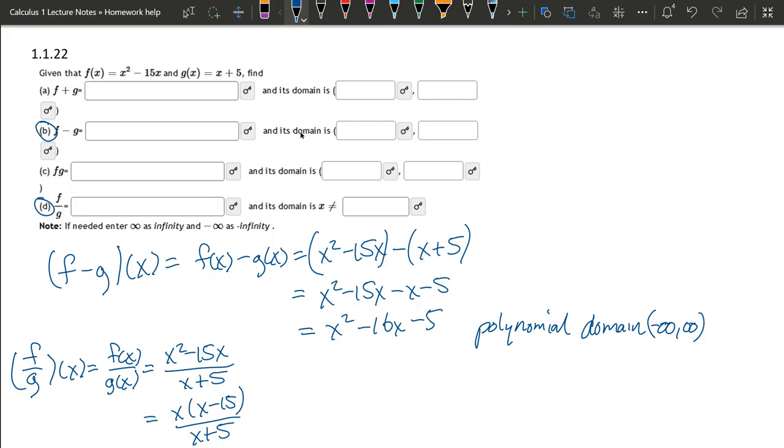So this is the answer for the first blank here. Now we're going to look at the domain. Now this domain is not written as what are the valid x values. Its domain is x should not be whatever I put here. So what I'm going to do is switch to red. And I'm going to basically divide by zero.